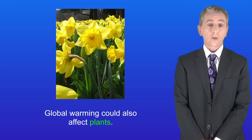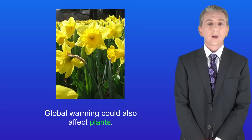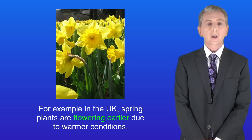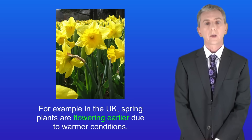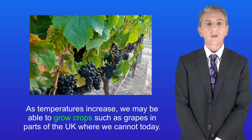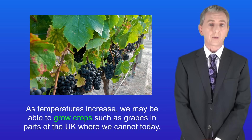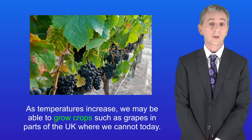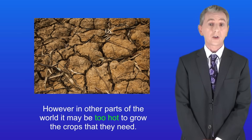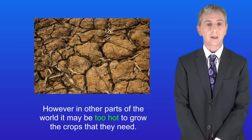Global warming could also affect plants. In the UK, spring plants are flowering earlier due to warmer conditions. As temperatures increase we may be able to grow crops such as grapes in parts of the UK where we cannot today. However, in other parts of the world it may be too hot to grow the crops that they need.